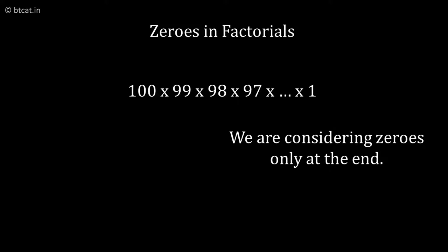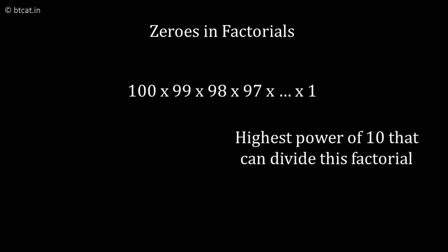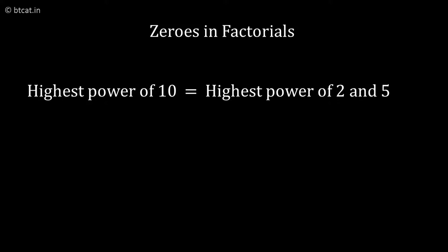We are not interested in zeros in the middle, we just want how many zeros will come in the last. As in, how many times 10 will divide this number, or rather what is the highest power of 10 which will divide 100 factorial. This is the same question. So the highest power of 10 is the same as the highest power of 2 and 5.